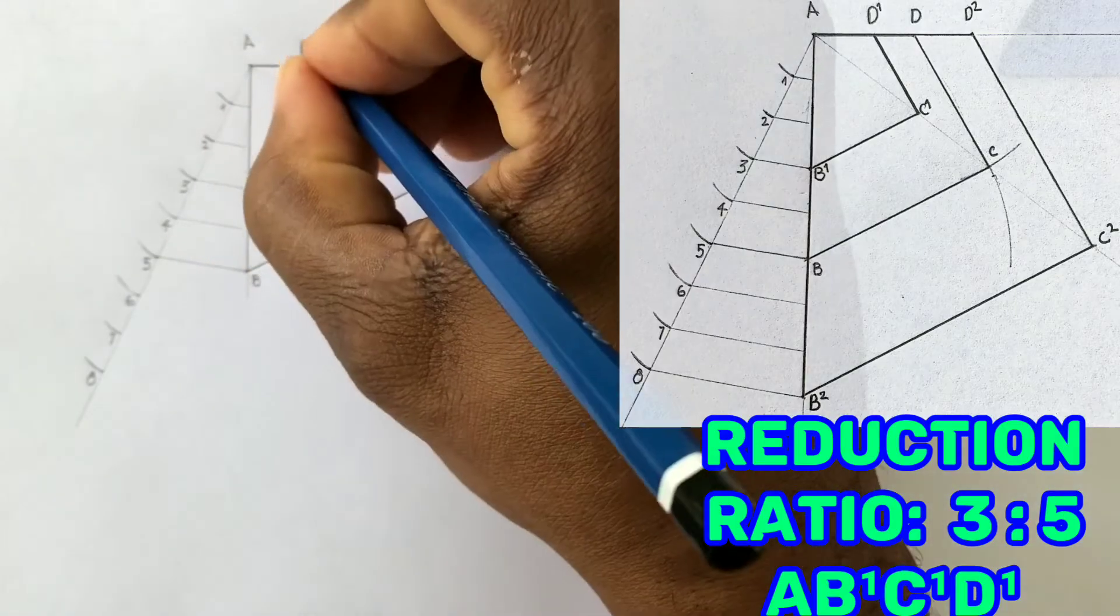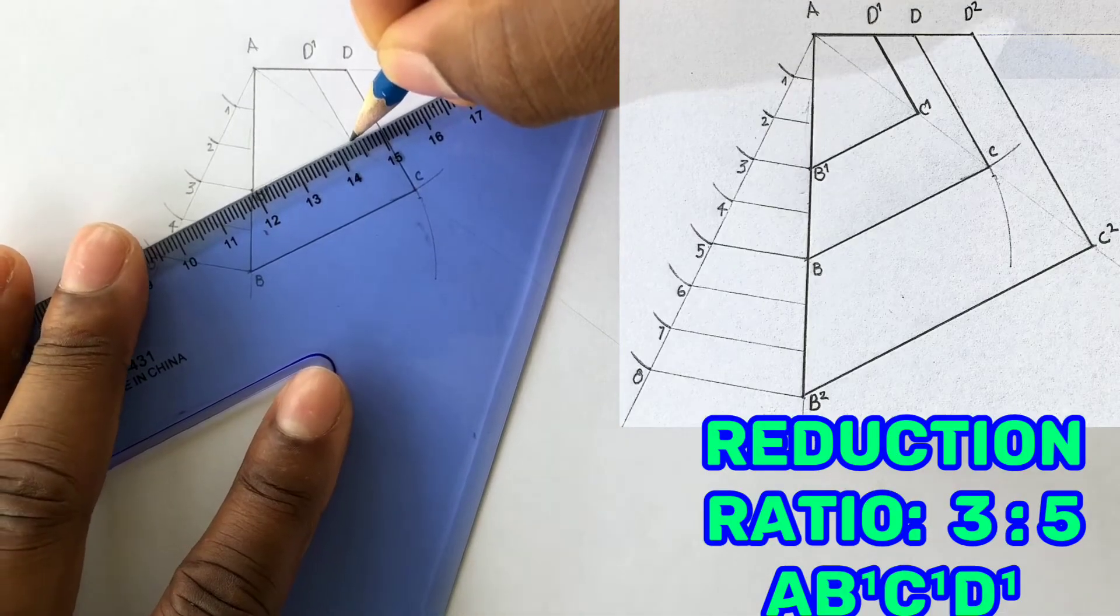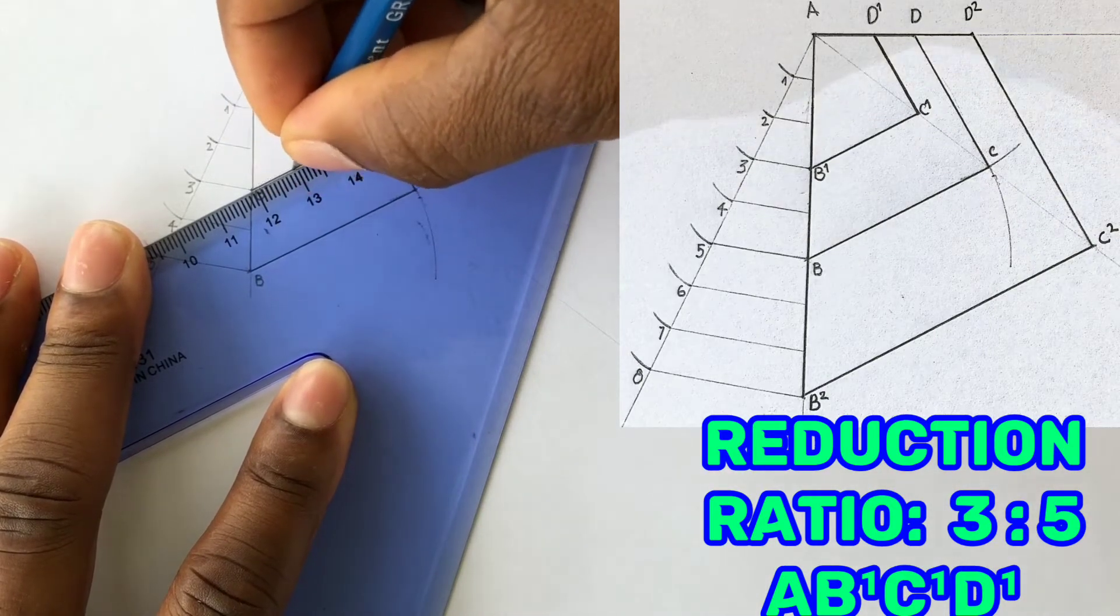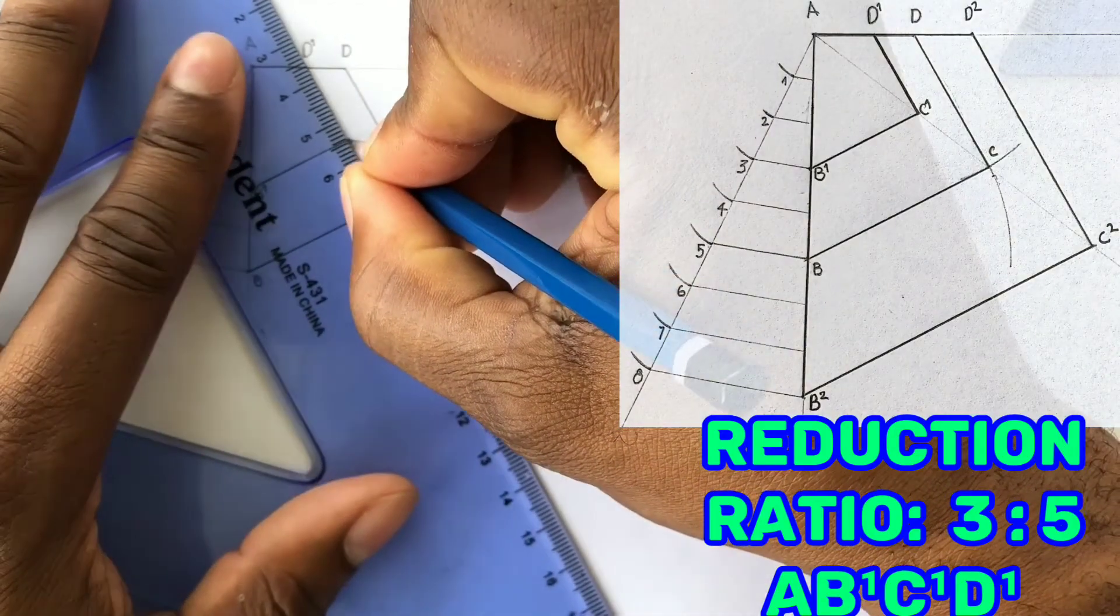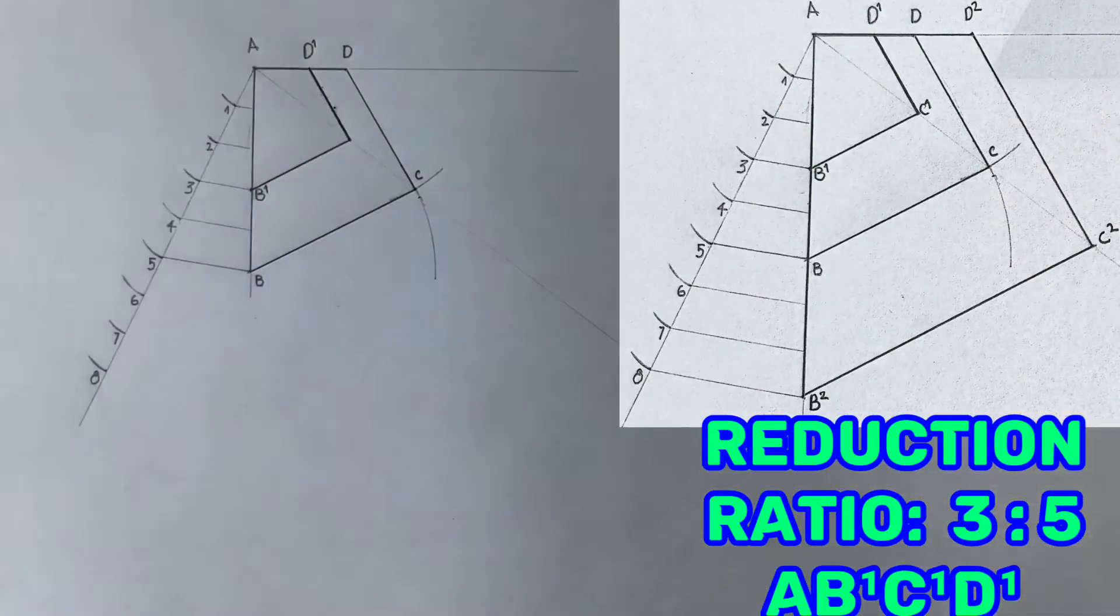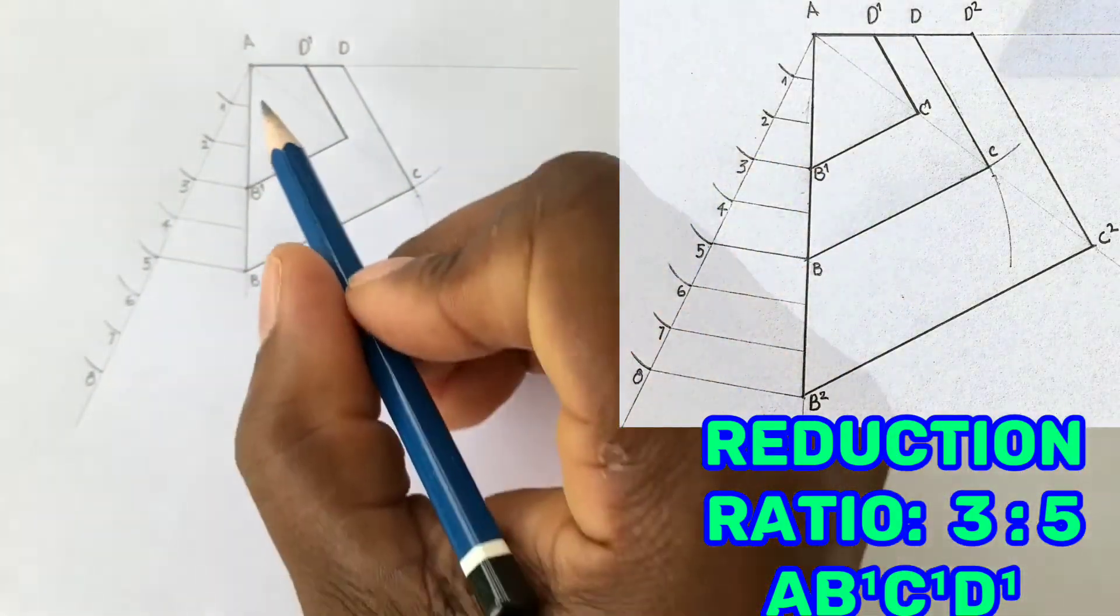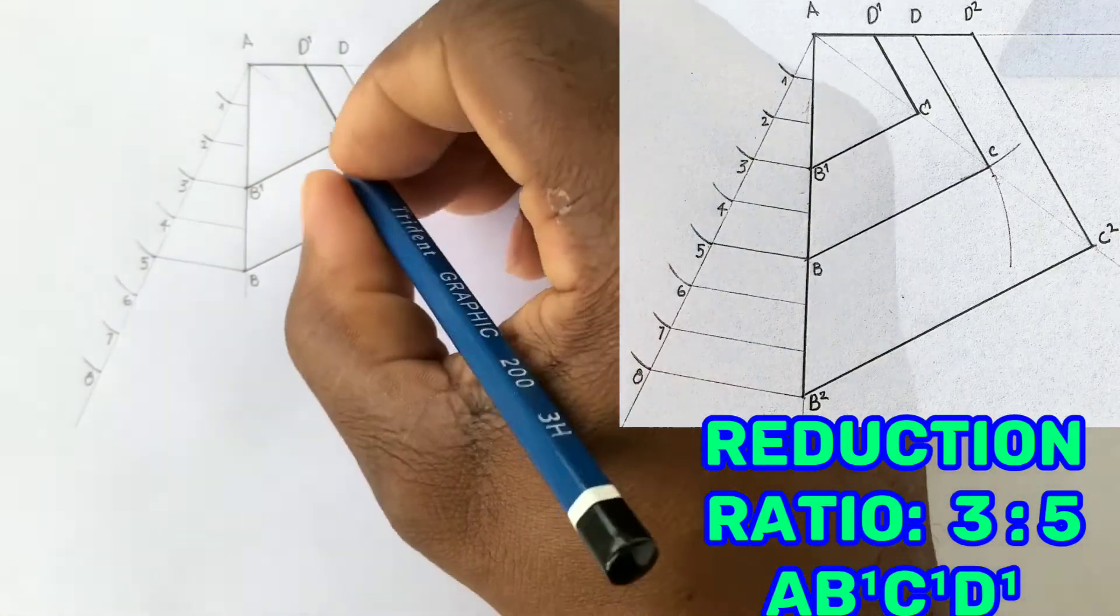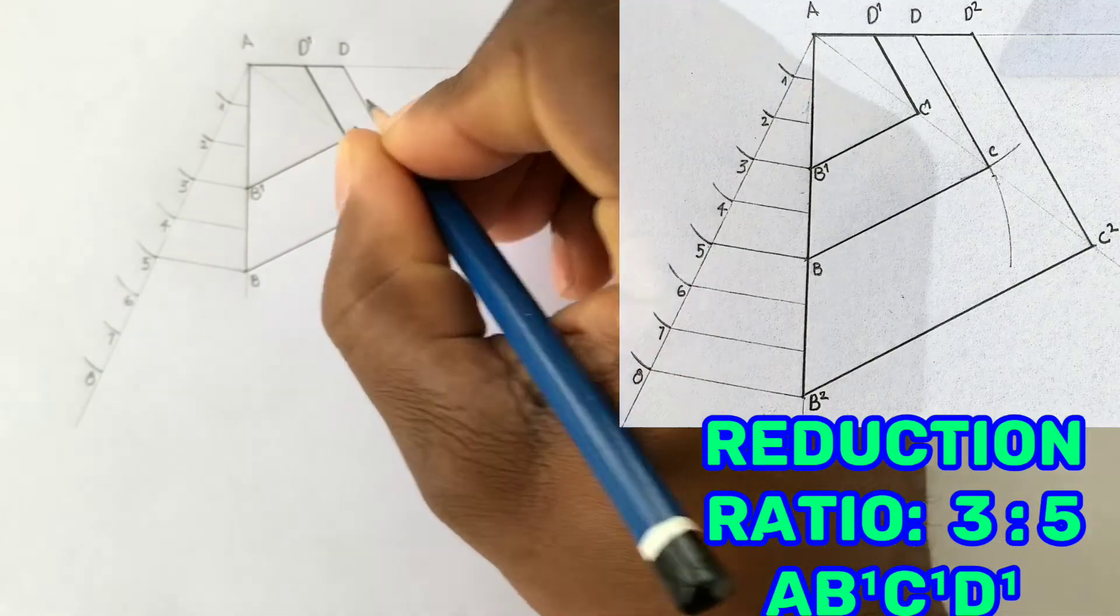Now outline the reduced quadrilateral AB1C1D1. So here we have our given quadrilateral ABCD. It is reduced to AB1C1D1.